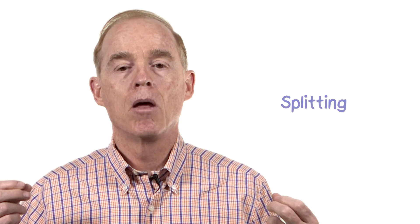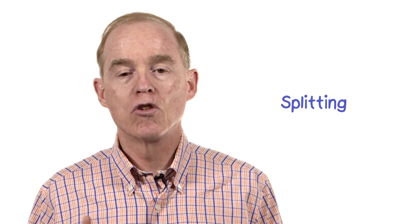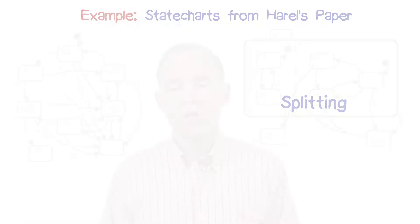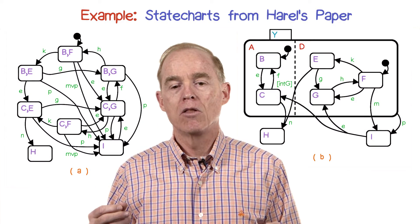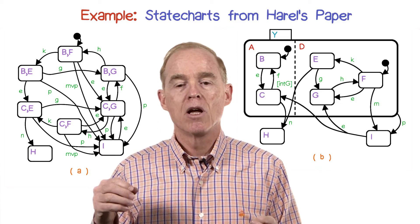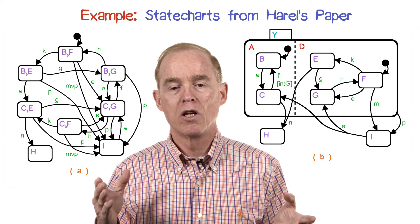Notice also that Harrell allows the splitting of a transition to go to two possible states, one in each of the concurrent arms. So the lower right state in the rightmost diagram, I, has an E transition coming out of it that's then split into two places.